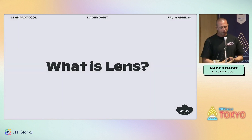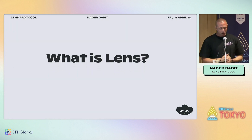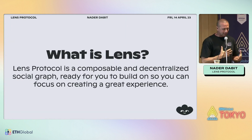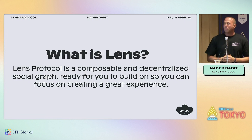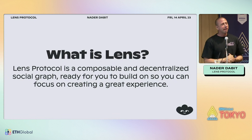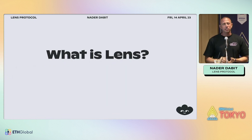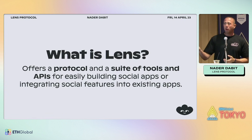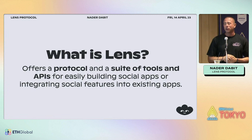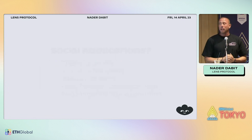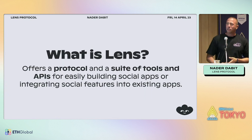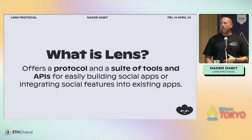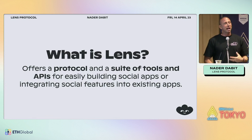Our documentation says Lens is a composable and decentralized social graph, but when the average person reads that it doesn't really resonate. When we're talking to developers, they often describe it as a protocol and a suite of tools and APIs for easily building social apps or integrating social features into existing apps. That's a better description because it gives more of an overview of what you can actually do with it.